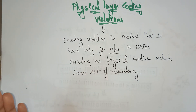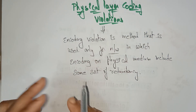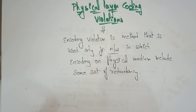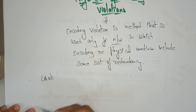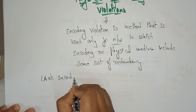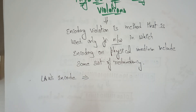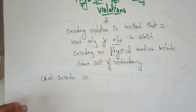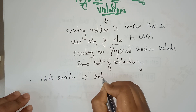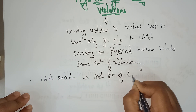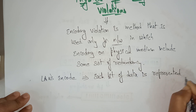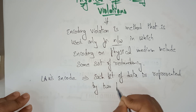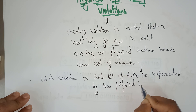This is used only for networks in which encoding on the physical medium includes some sort of redundancy. Let's consider a LAN encoding. In local area networks, each bit of data is represented by two physical bits, instead of just one physical bit.